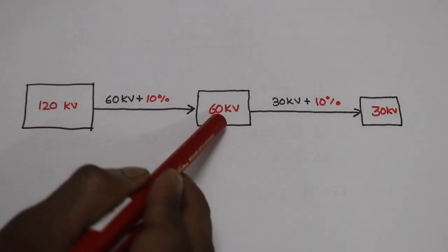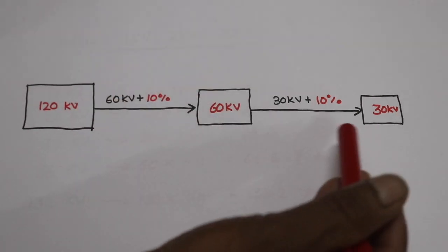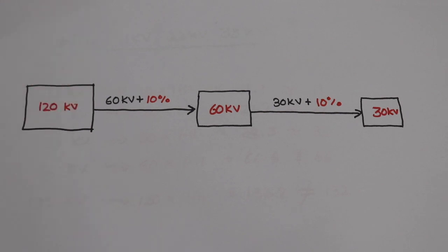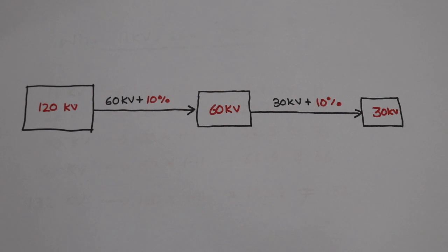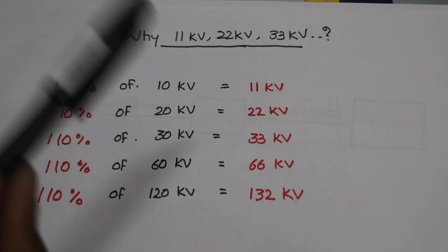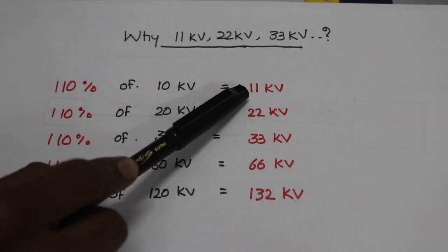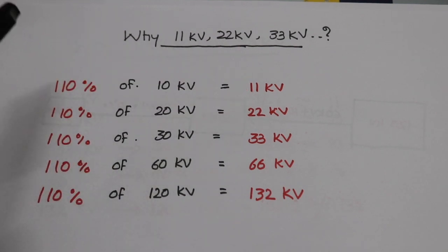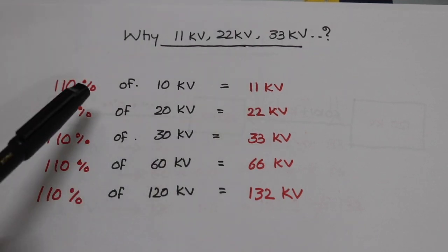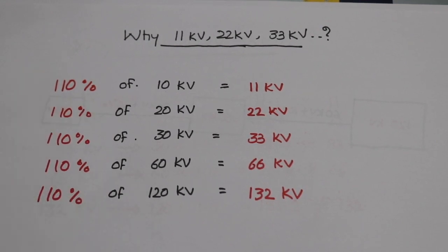The low voltage is equal to 60kV. This is the receiving substation — 30kV at 10kV when it comes to the transmission time. Now we have our chart: 10kV plus 10kV, total is 110kV, that is now 11kV. That is the 10kV we have, and we have to account for the loss. The voltage to transmit takes a lot more.